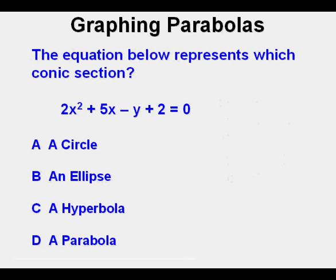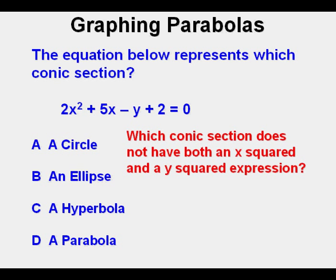Let's look at a problem. The equation below represents which conic section? 2x² + 5x - y + 12 + 2 = 0. The first way I would look at this is to consider the forms of the conic sections. Which is the only section that does not have both an x squared and a y squared expression? If you can answer that question, you have solved this problem.